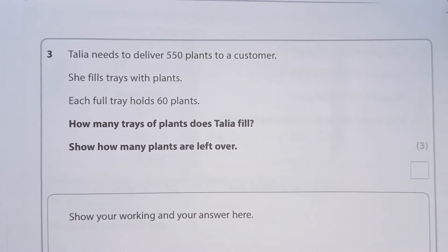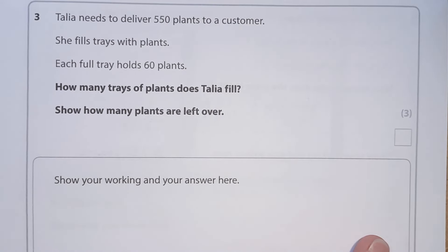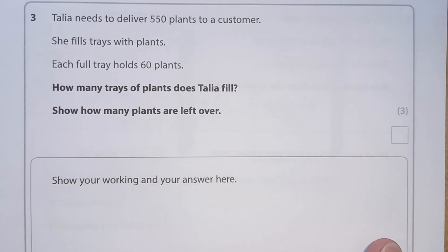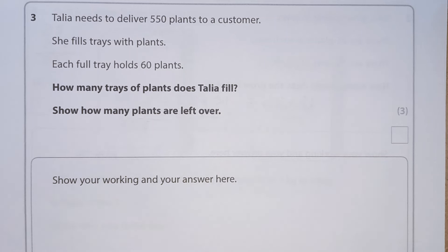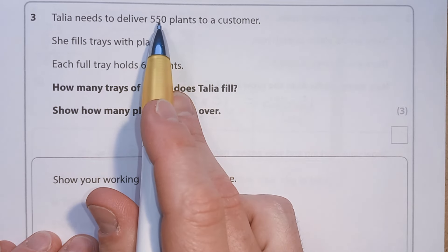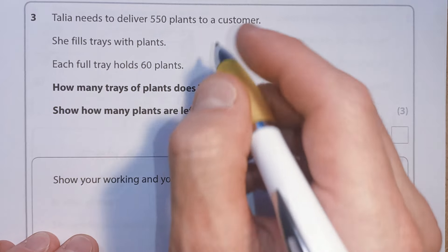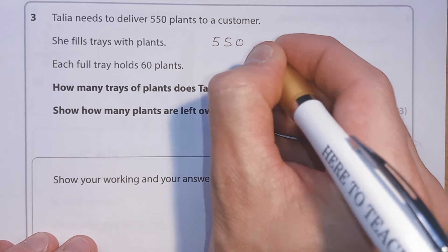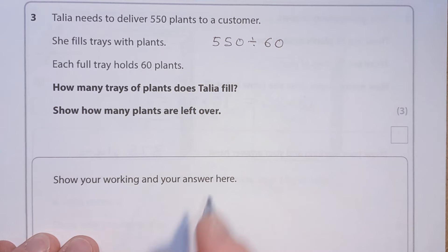Question three. Talia needs to deliver 550 plants to a customer. She fills trays with plants. Each full tray holds 60 plants. How many trays does Talia fill, and how many plants are left over? We want to know how many lots of 60 fit into 550, so we calculate 550 divided by 60.